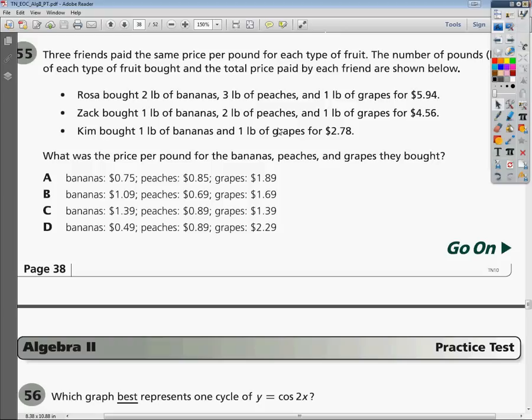The question says three friends paid the same price per pound of each type of fruit. The number of pounds of each type of fruit bought and total price paid by each friend are shown below. Rosa bought two pounds of bananas, three pounds of peaches, and so on.